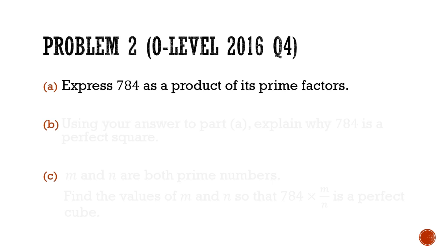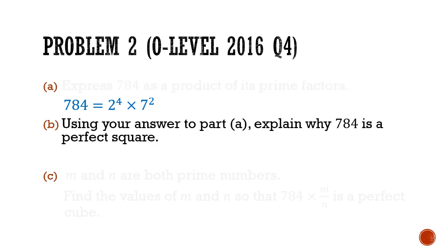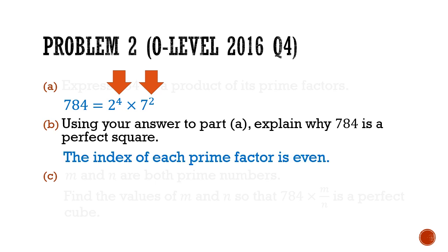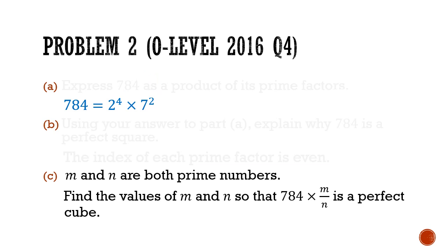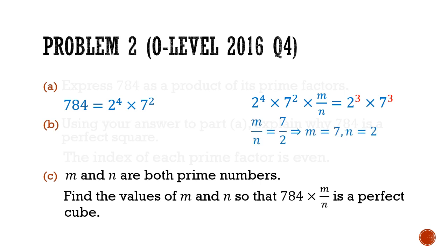For part A, prime factorizing 784 gives us 2 to the power of 4 times 7 squared. For part B, we note that the indices of the prime factors are 4 and 2, both even — hence 784 is a perfect square since every prime factor has an even index. For part C, we need to multiply by prime m and divide by prime n to get a cube: 2 to the power of 4 drops to 2 cubed (dividing by 2), and 7 squared goes up to 7 cubed (multiplying by 7). So m equals 7 and n equals 2.